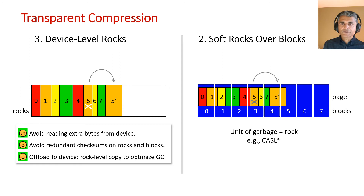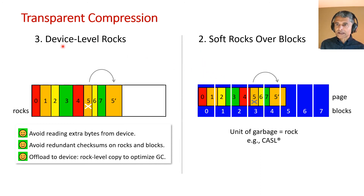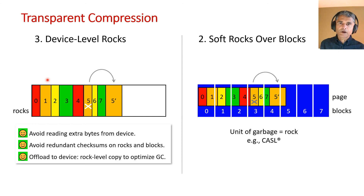I have shown device-level rocks to the left. For soft rocks, the file system has to read an integral number of blocks — for example, to read page 1, it has to read block 0 and block 1. With device-level rocks, it can read just the desired rock. This would not matter much for spinning disks, but it can matter for SSDs by saving memory and I/O bandwidth. Device-level rocks have some other advantages which are covered in the paper.